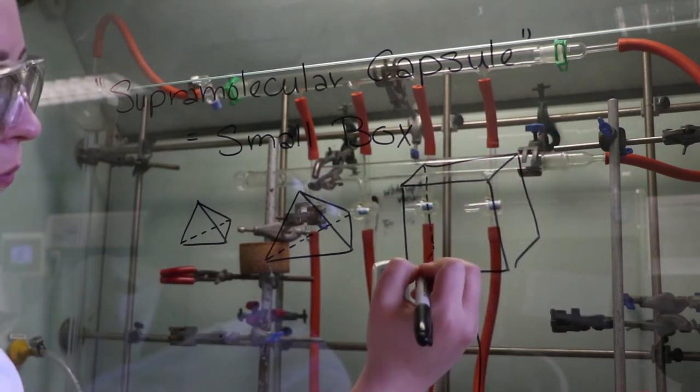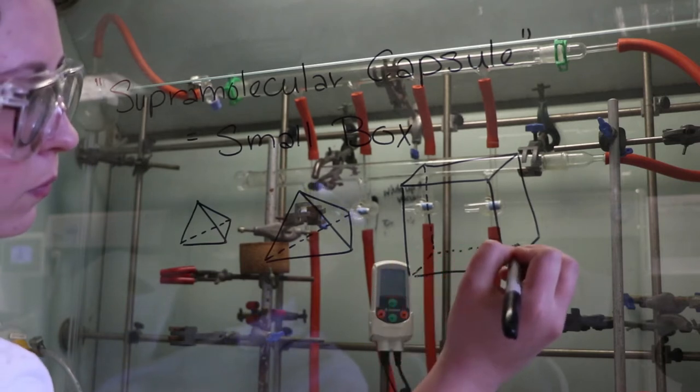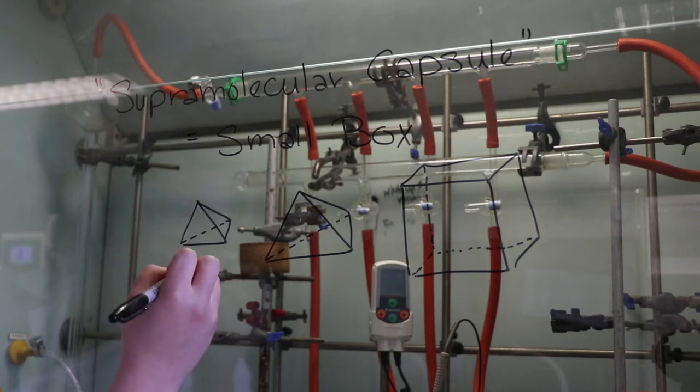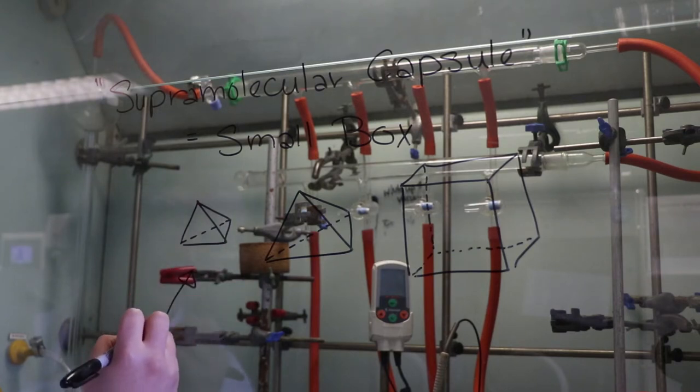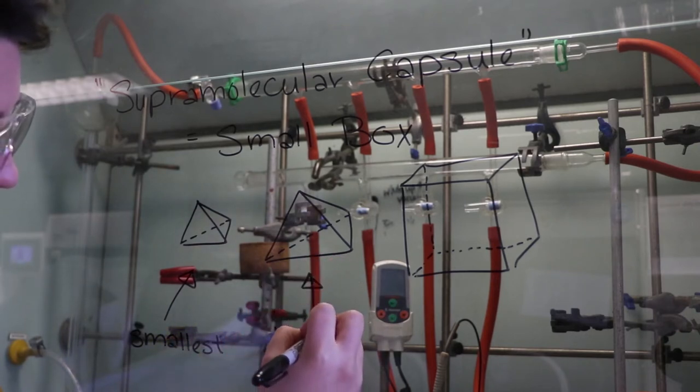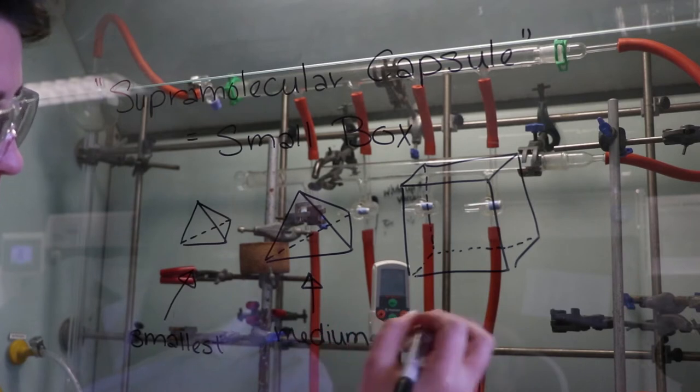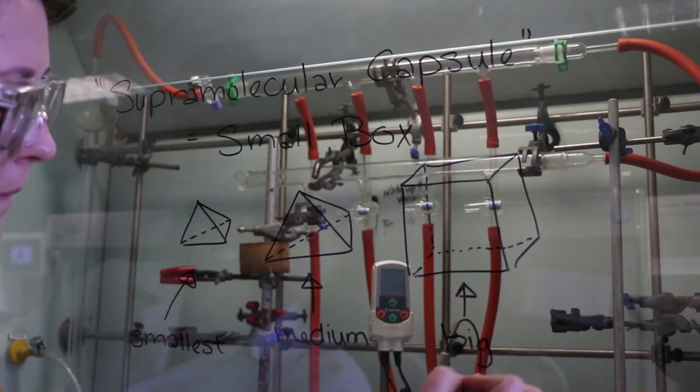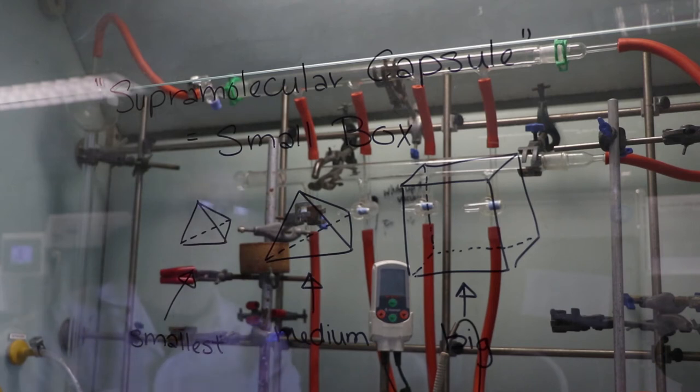Some are called tetrahedrons, so those are like a pyramid with a triangle base. Others are cubes, and these different sized cages have different sized cavities inside of them, which means that you can put different sized cargos inside. You can put a small cargo inside a small cage, a medium sized cargo inside a medium cage, and a larger cargo inside a largest cage.